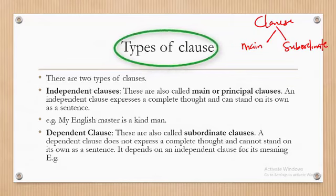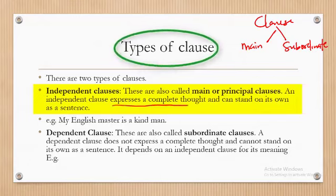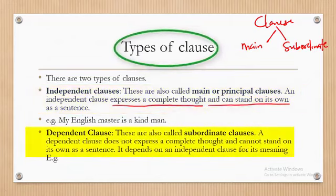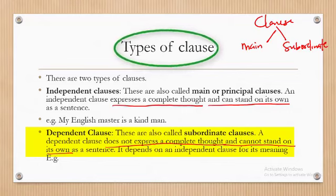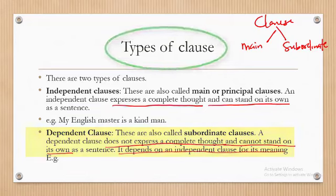Main clauses, or independent clauses, are clauses that express a complete thought. They can always stand on their own. But in the case of a dependent clause, it does not express a complete thought and cannot stand on its own to convey a complete sense. It must depend on the independent clause for its meaning.